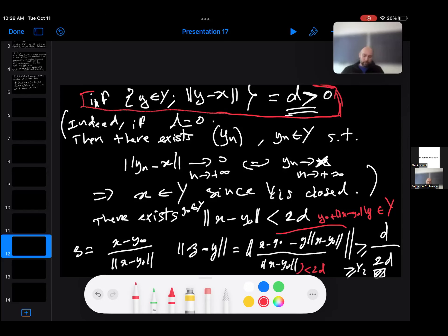So next, from there, you can find a y_0 here such that the distance here between x and y_0 is less than 2d, which comes from here. And then you define z as this quantity. You can prove that ||z - y|| is greater than one divided by two. This comes from this thing and this estimate here.